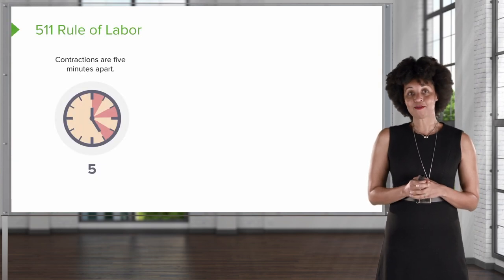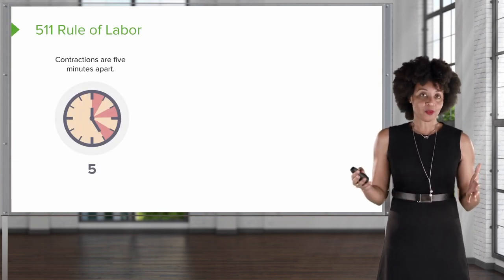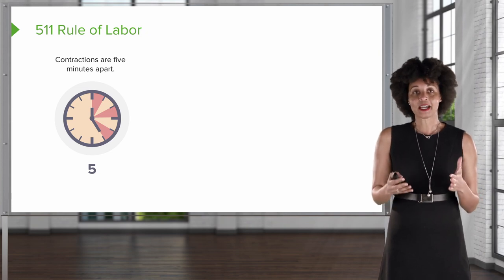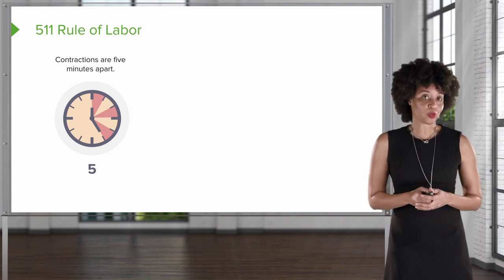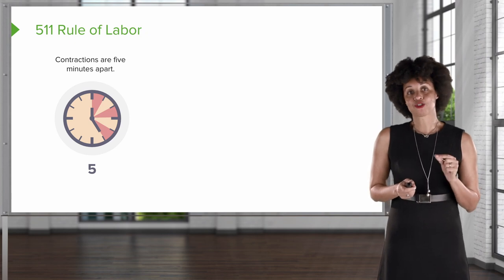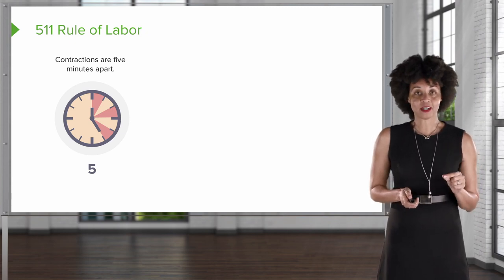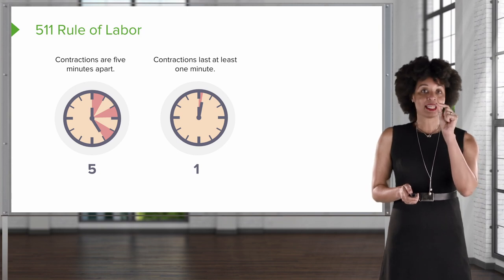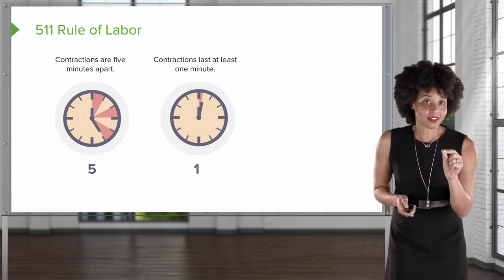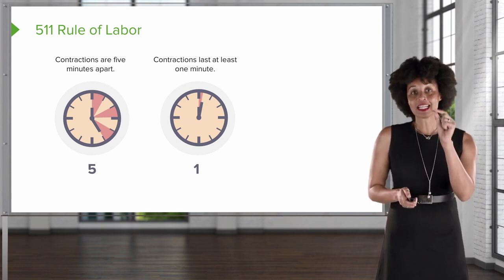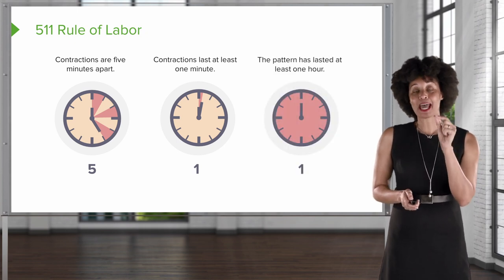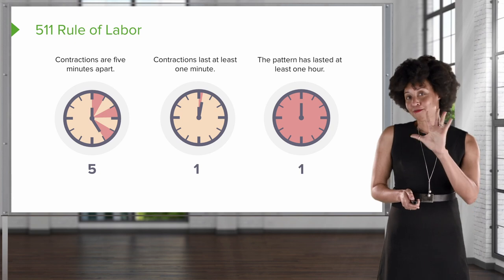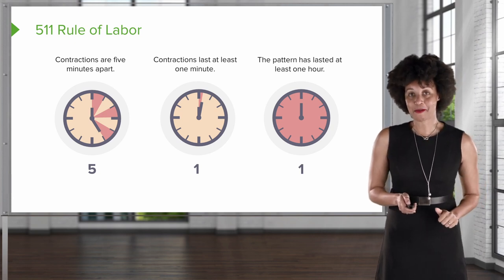Now I want to give you a rule. The rule for labor is called the 5-1-1 rule. Contractions will be five minutes apart, they will last at least one minute, and that pattern will be consistent for at least one hour. That's the 5-1-1 rule of labor.